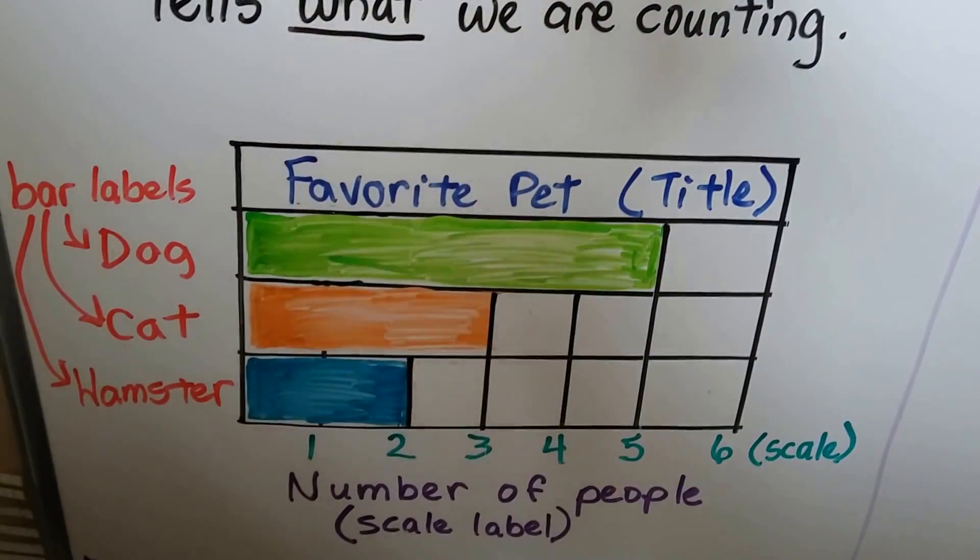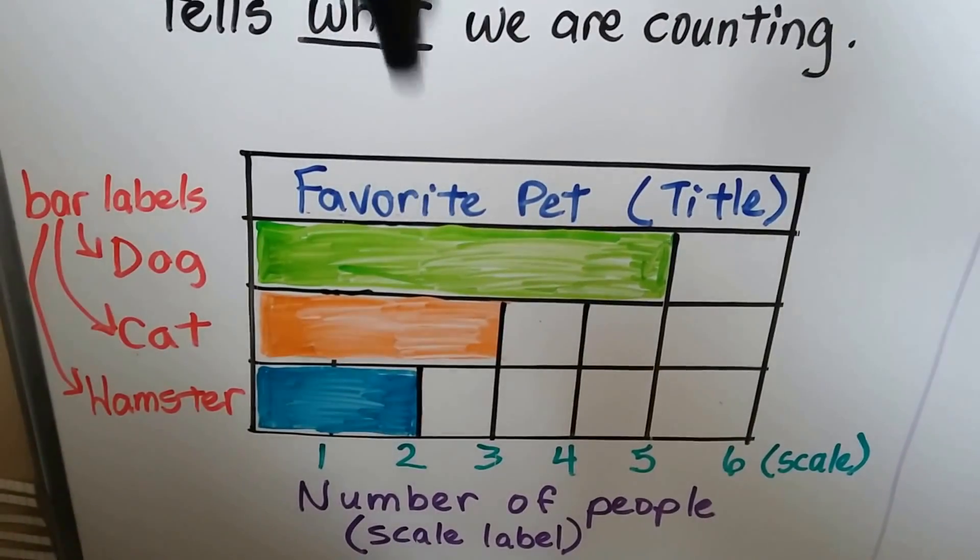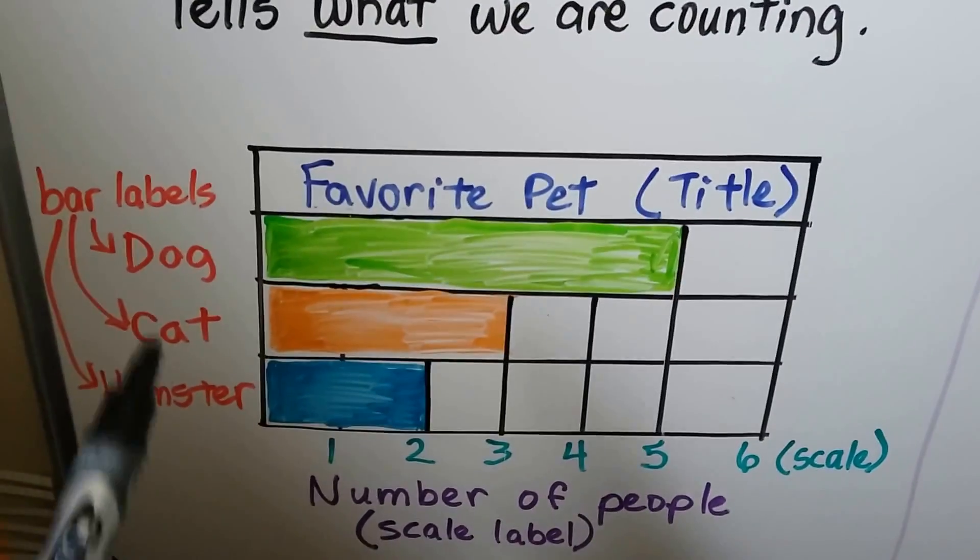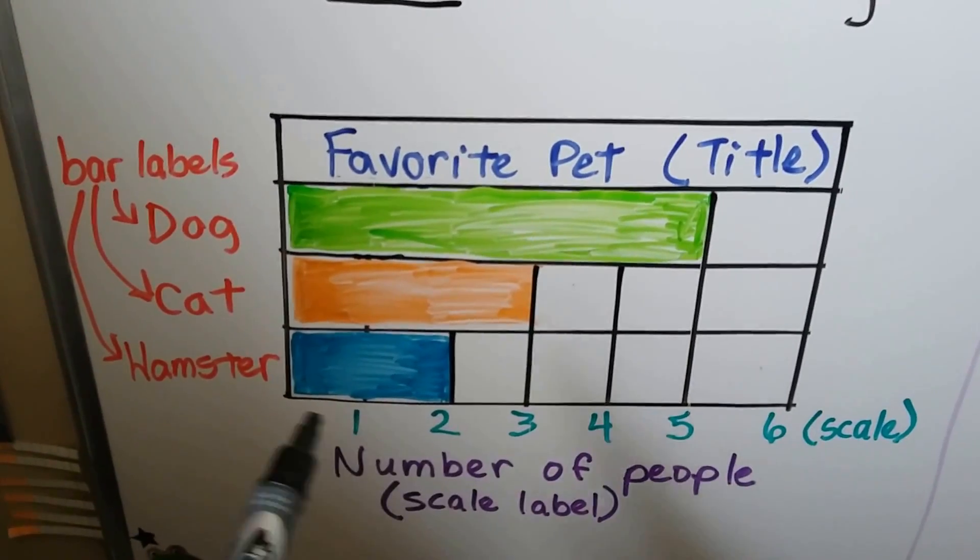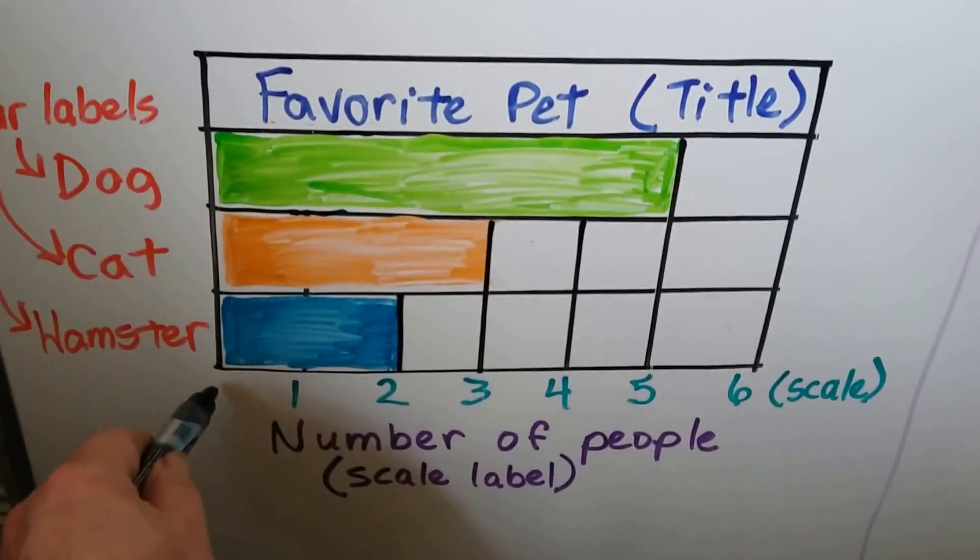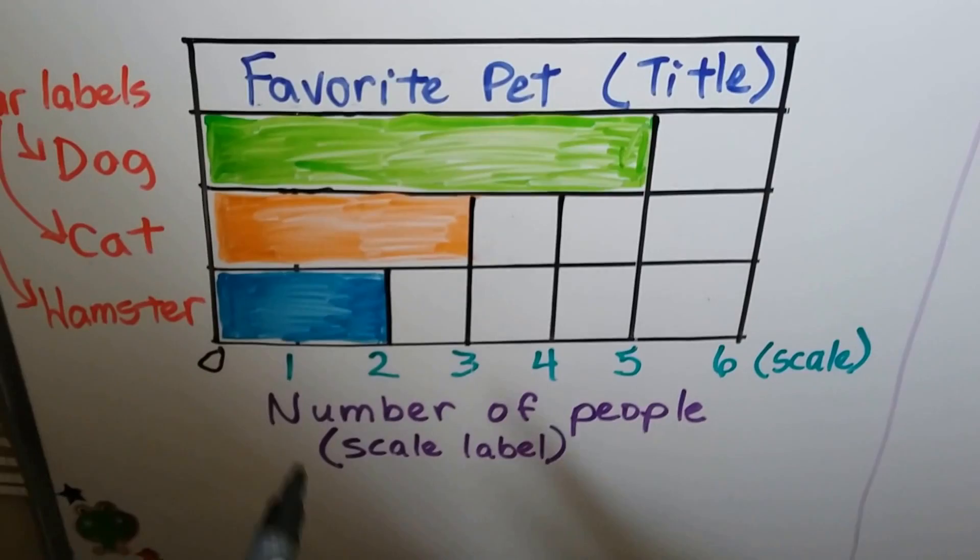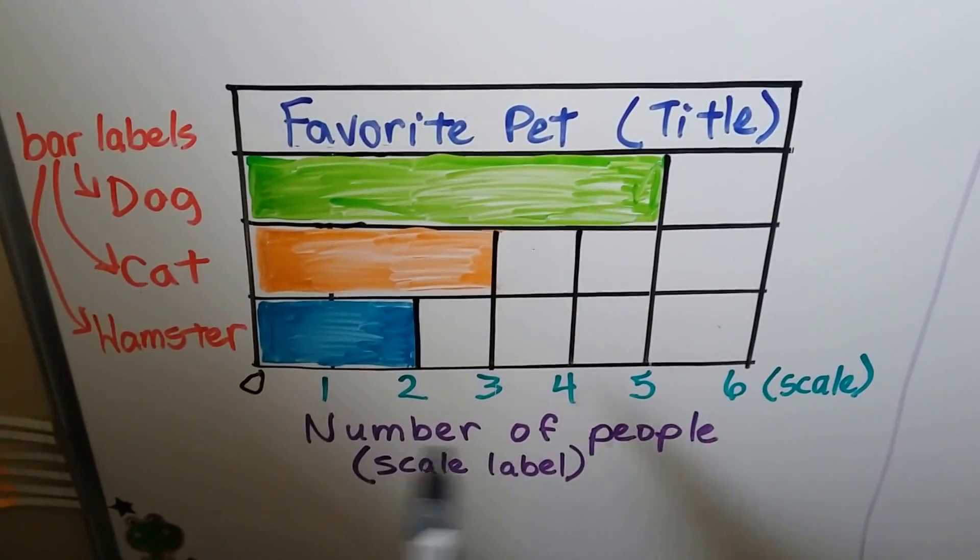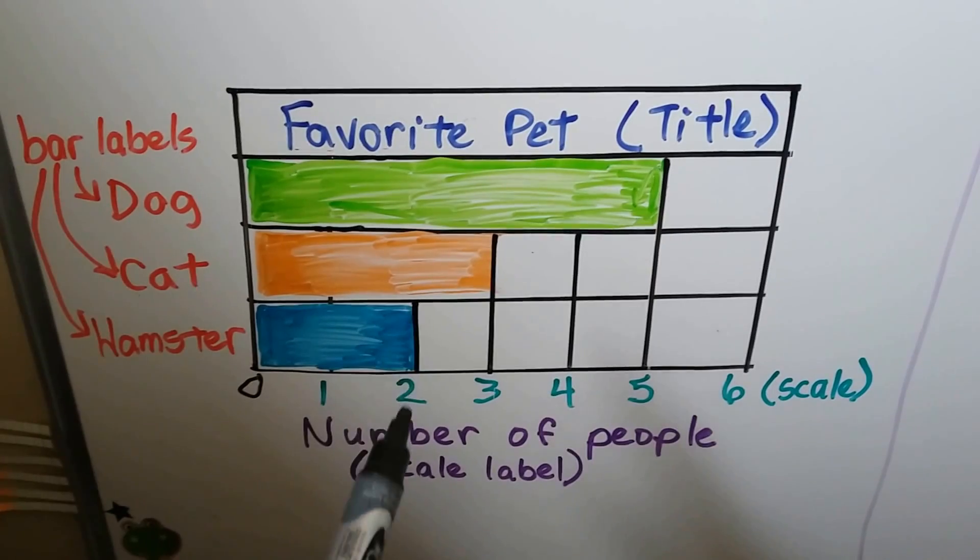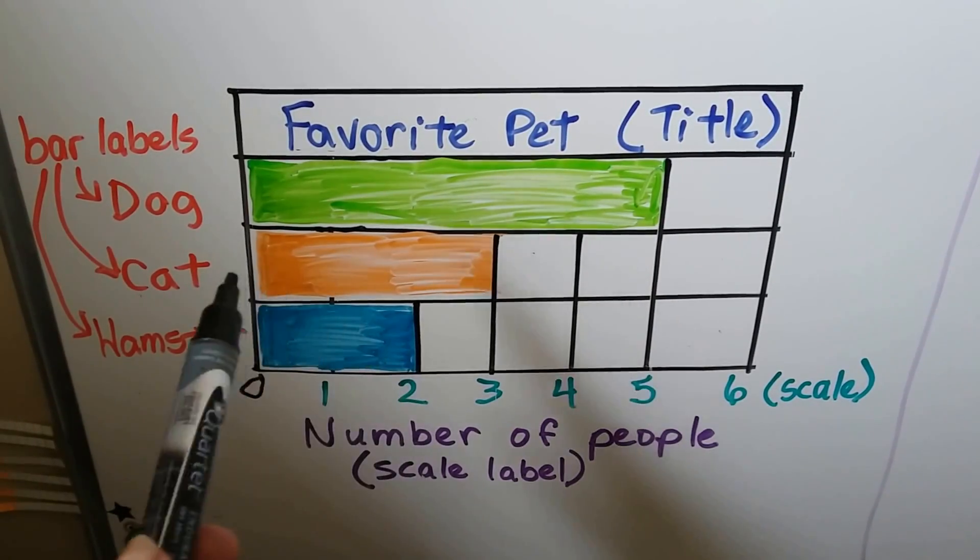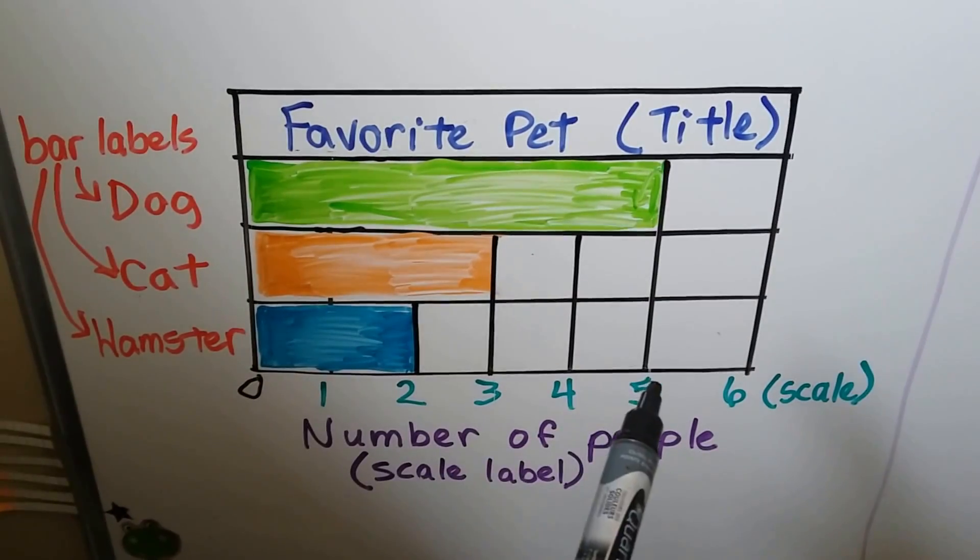We learned that in the last video. So to review, Favorite Pet is the title of this bar graph. The bar labels are Dog, Cat, Hamster. And here's the scale. It goes from 0 to 6, and the scale label is the number of people. We can look at the bar graph and see that 2 people like hamsters, 3 people like cats, and 5 people answered Dog.